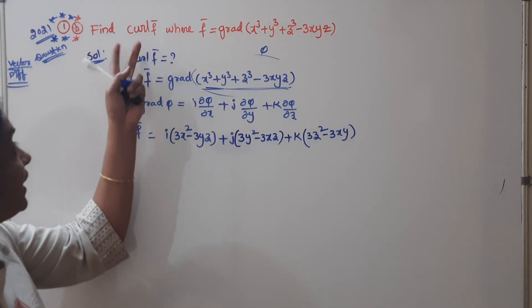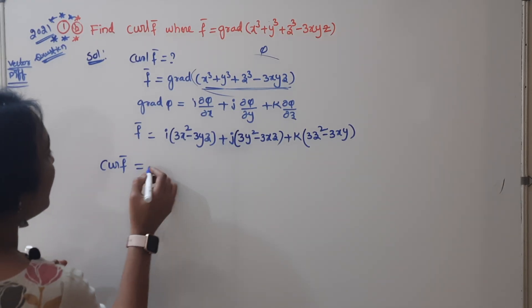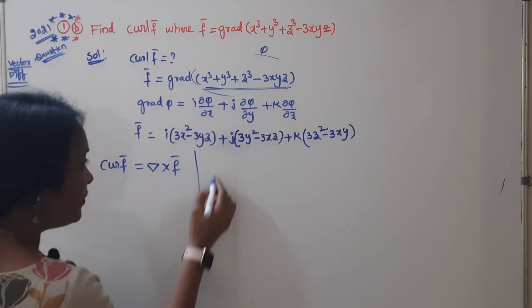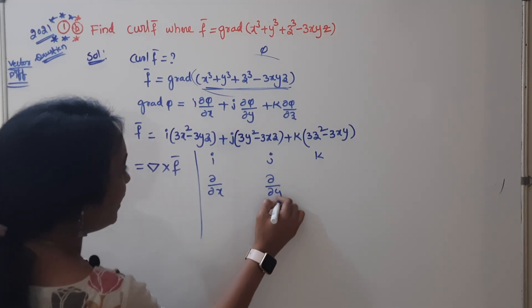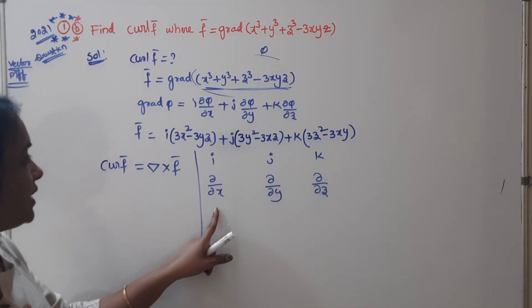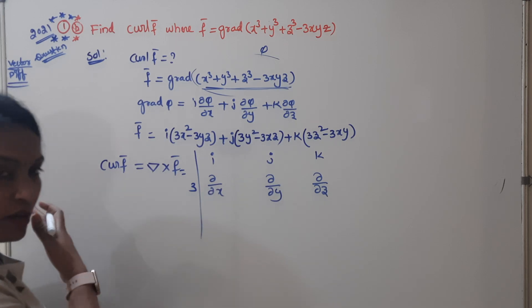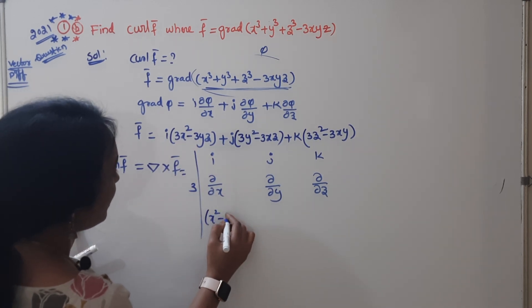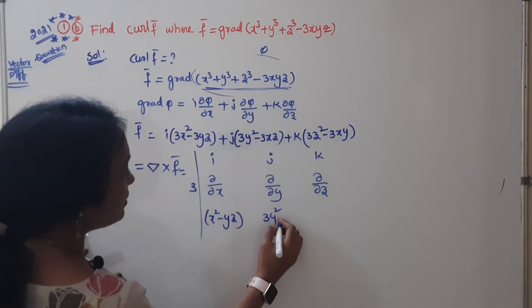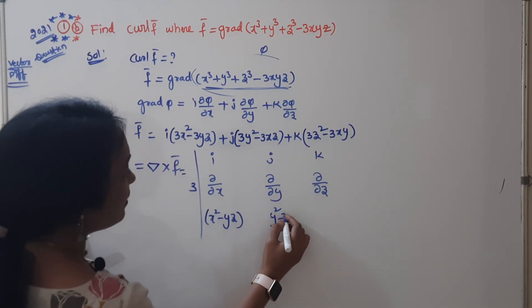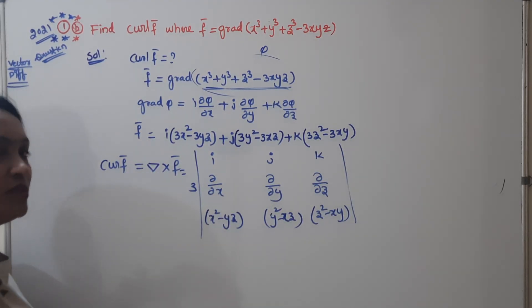Now find curl(F̄). Curl is the cross product: del × F̄. Set up the 3×3 determinant with first row i, j, k; second row ∂/∂x, ∂/∂y, ∂/∂z; third row (3x² - 3yz), (3y² - 3xz), (3z² - 3xy).